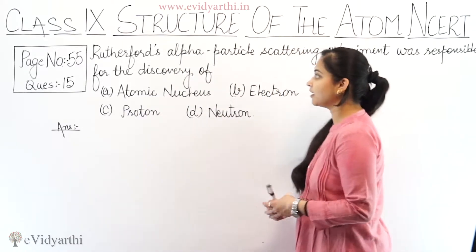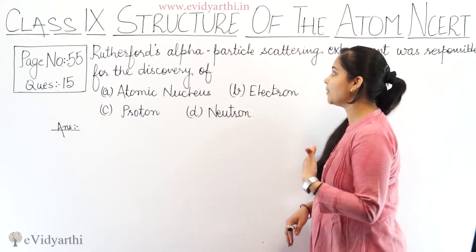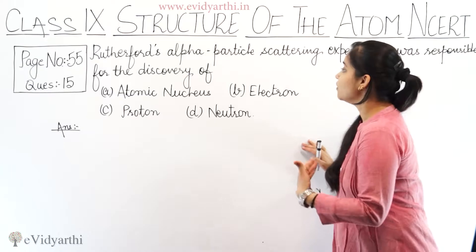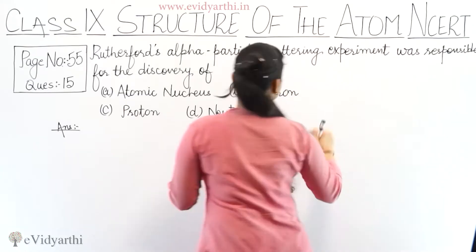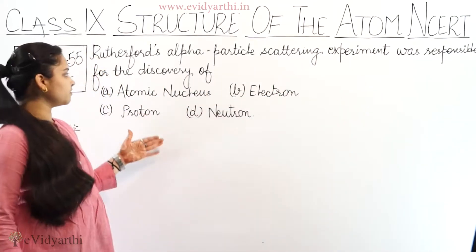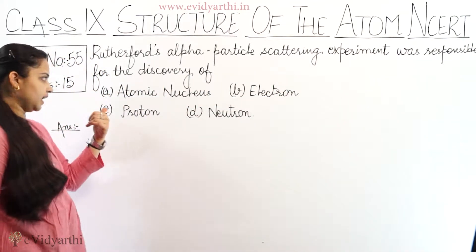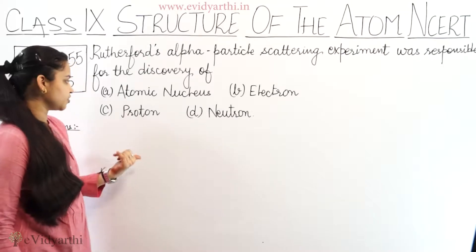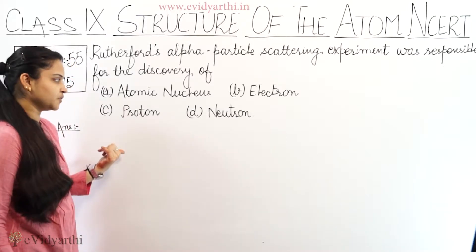The question is: Rutherford's alpha particle scattering experiment was responsible for the discovery of — A. Atomic nucleus, B. Electron, C. Proton, and D. Neutron.